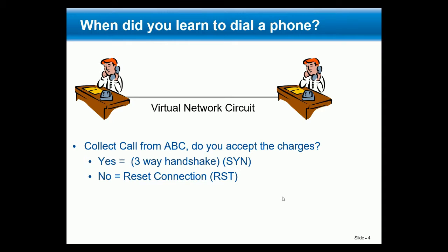All this stuff gets initiated in that initial three-way handshake. I tell you I want to synchronize sequence numbers, what options are in use. I set my sequence number, you take my sequence number plus one — the appropriate ACK from you. You tell me your sequence number, I take it plus one — the appropriate ACK for me — and we've agreed to start a connection.